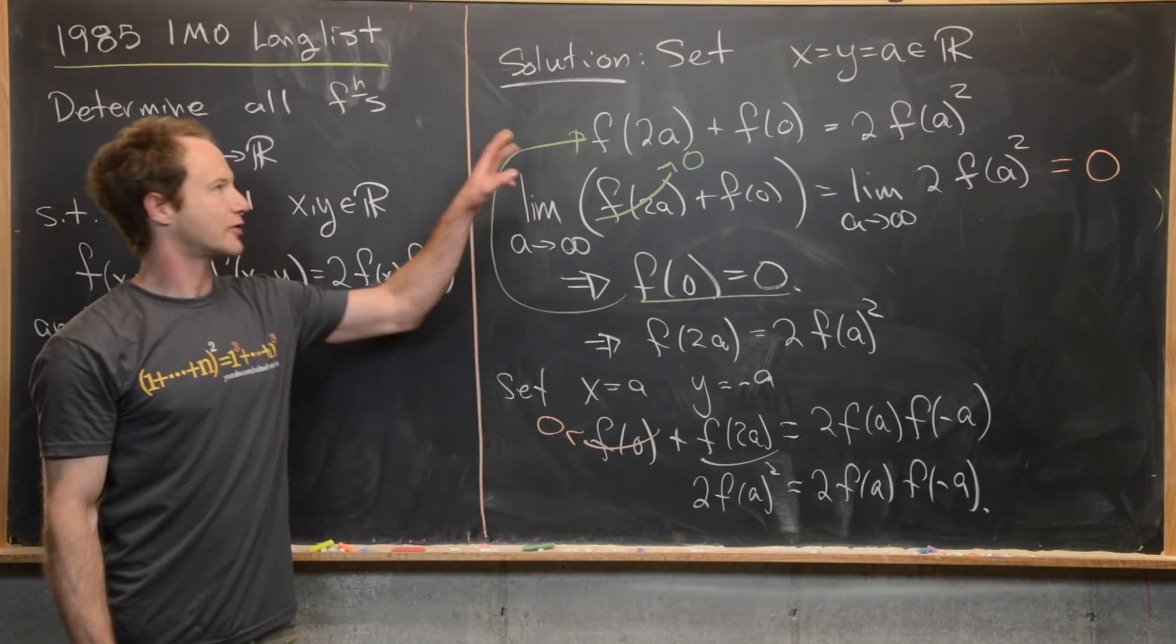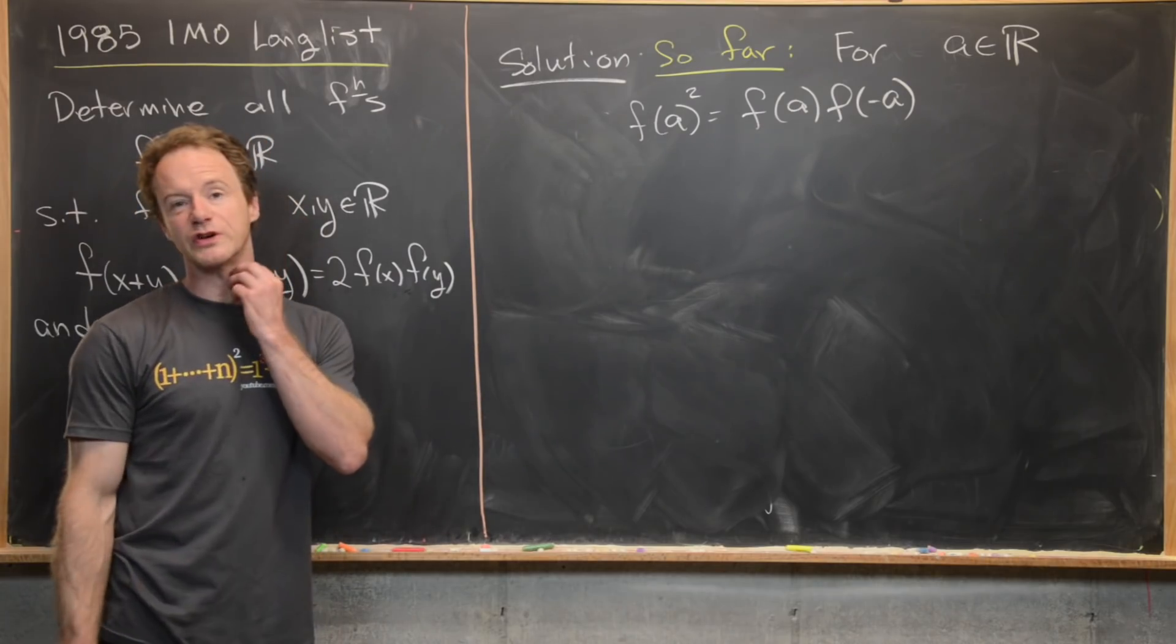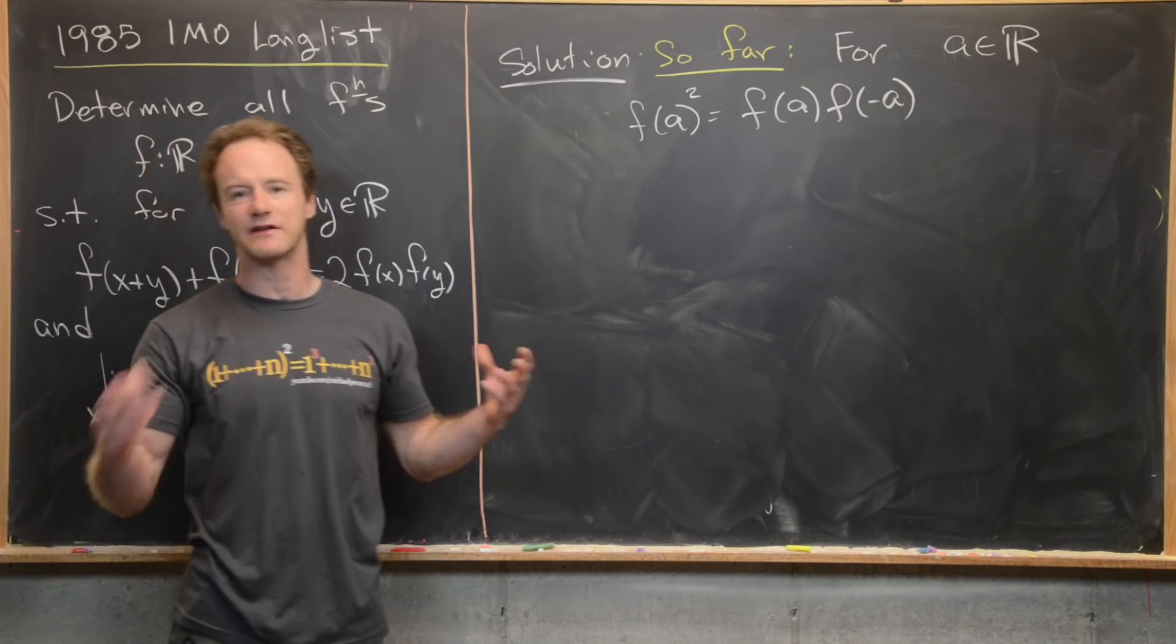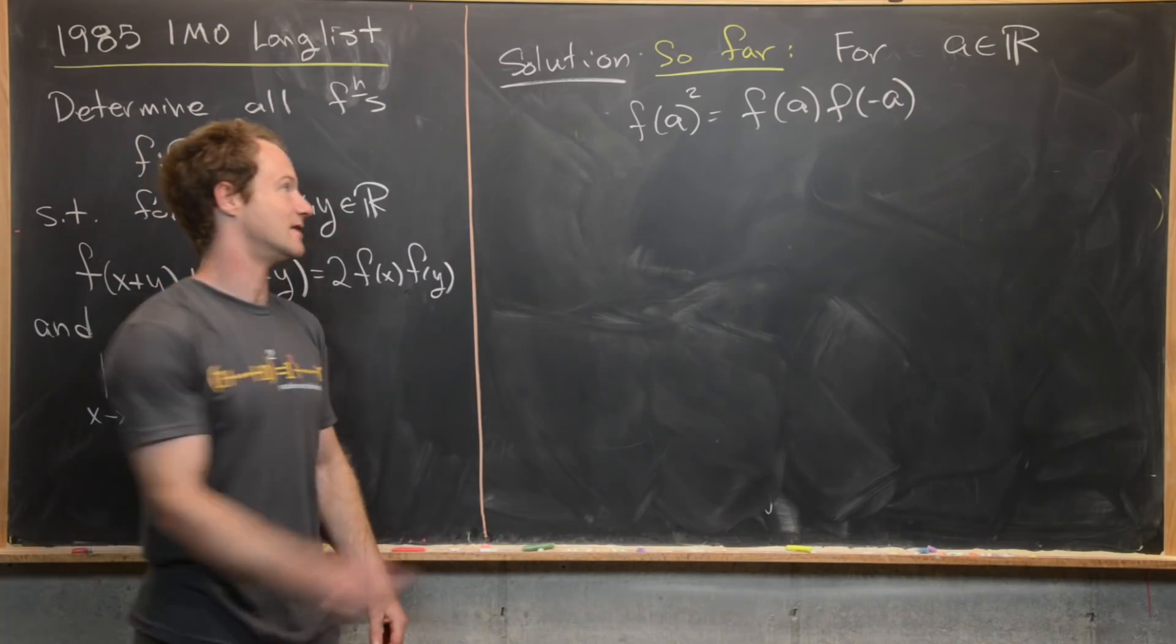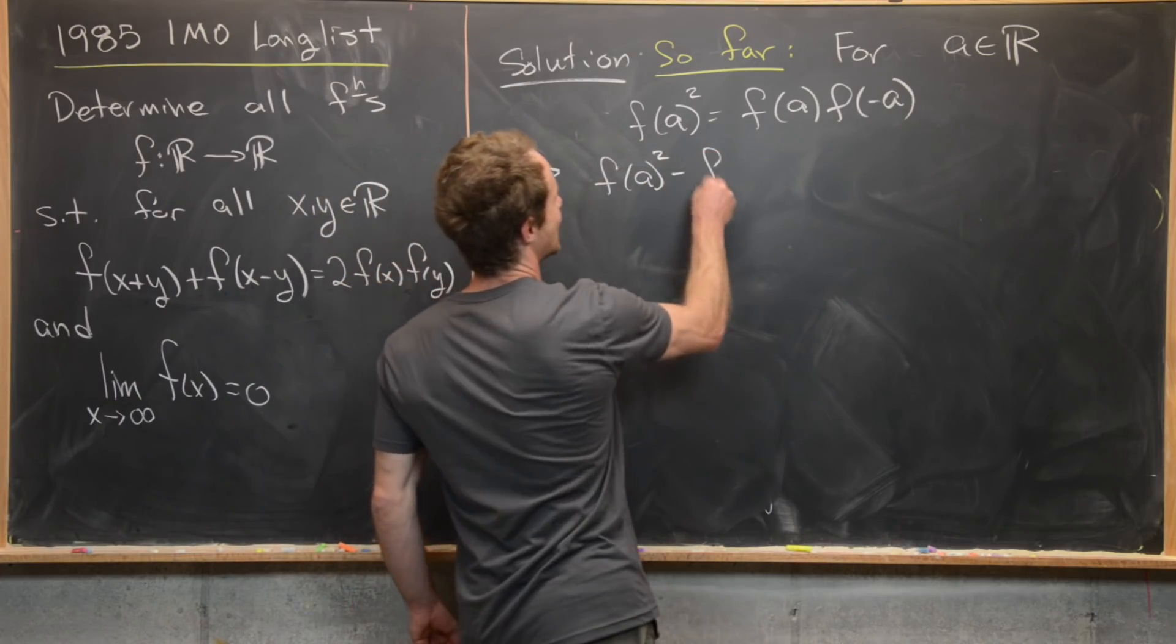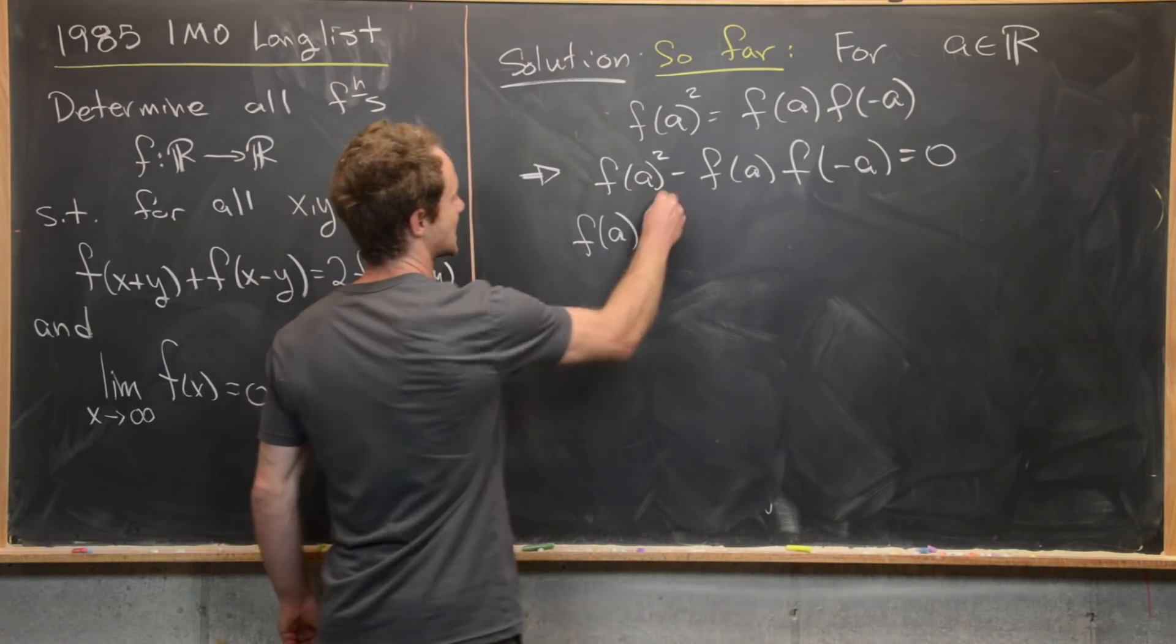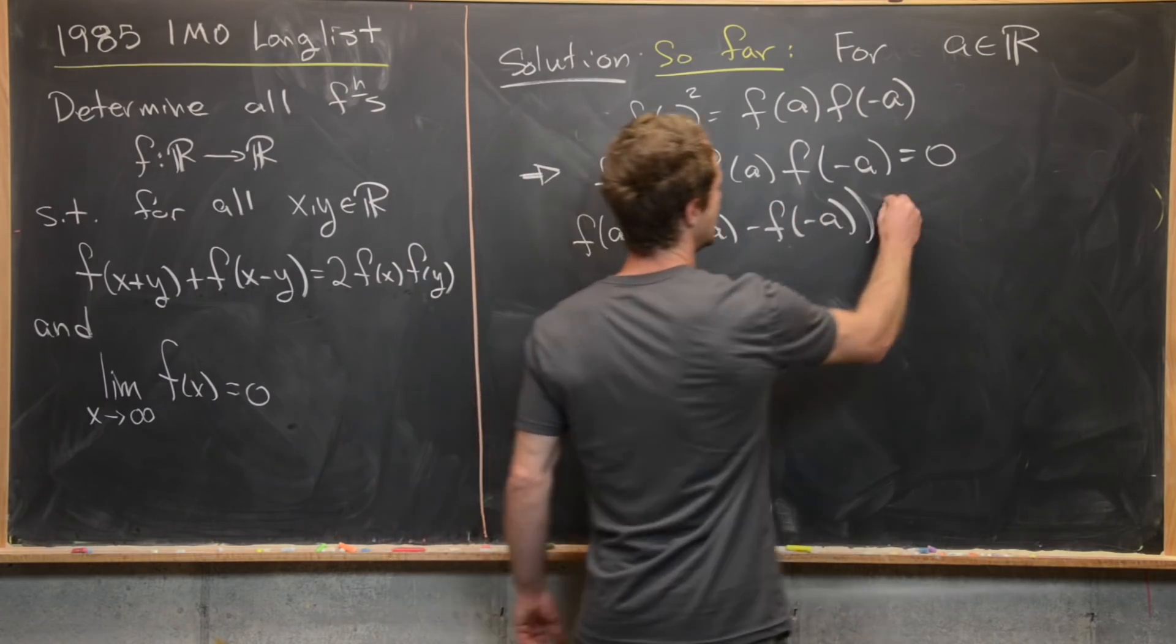I'll go ahead and bring that to the top, and then we'll work towards the end. On the last board, we showed that for an arbitrary real number a, we have f(a)² = f(a)f(-a). So I divided the final equation by 2. Notice that implies f(a)² - f(a)f(-a) = 0, which means we have f(a)(f(a) - f(-a)) = 0. But now this leads to two cases.